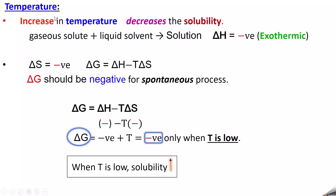Next we go to temperature. When you increase the temperature, what happens to the solubility of the gaseous solute in liquid solvents? It decreases, because when a gaseous solute dissolves in liquid solvents to form a solution, this reaction is an exothermic reaction — delta H is negative. For an exothermic reaction, when you increase the temperature, the solubility decreases.